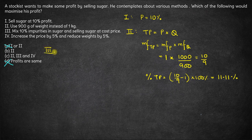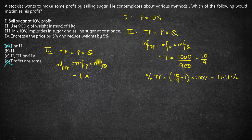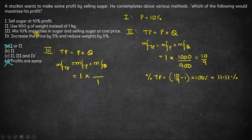Let's look at the third case. He mixes 10% impurities in sugar and sells sugar at cost price. Total price is price per kg into quantity. Since he sells at cost price, multiplication factor for price is selling price upon cost price, which is 1. For quantity: if he buys 1 kg and mixes 10% impurities, the total weight becomes 1.1 kg. So something bought as 1 kg is now sold as 1.1 kg. Multiplication factor for quantity is 1.1 upon 1, which equals 1.1.